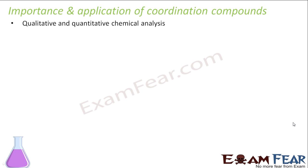The first application is in quantitative and qualitative chemical analysis. It is used to detect the presence of cations. Some color reactions give different colors based on metal ions, and these are used to detect the presence of cations. In these reactions, ligands react with metal ions to form a coordination complex, which has a characteristic color. For example, EDTA and DMG are used to detect the presence of cations.